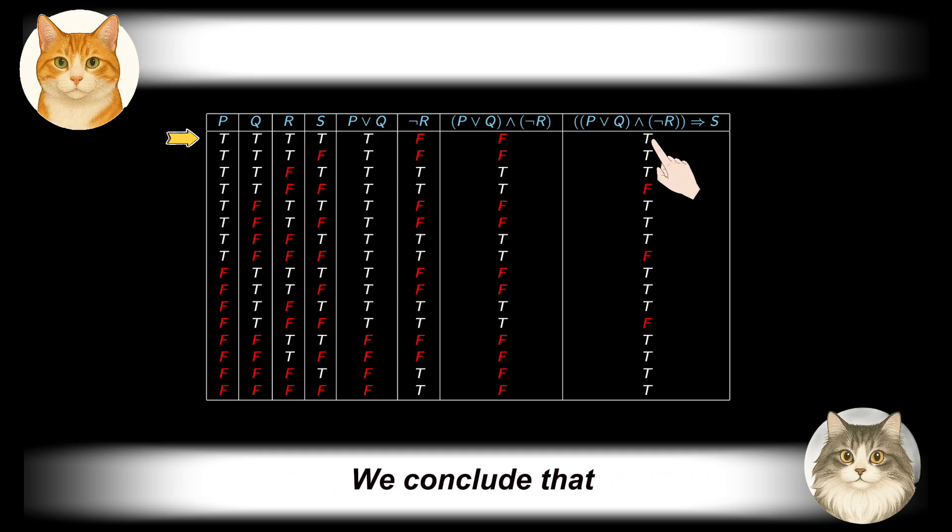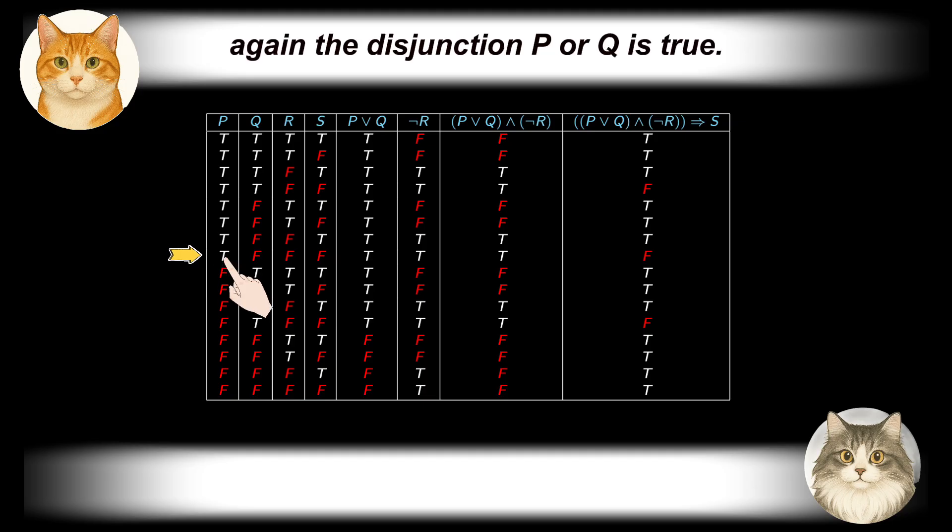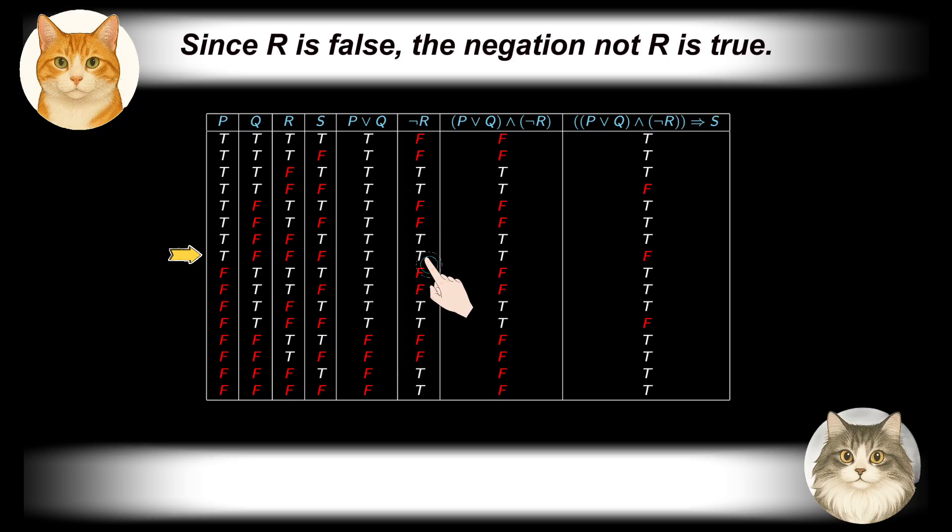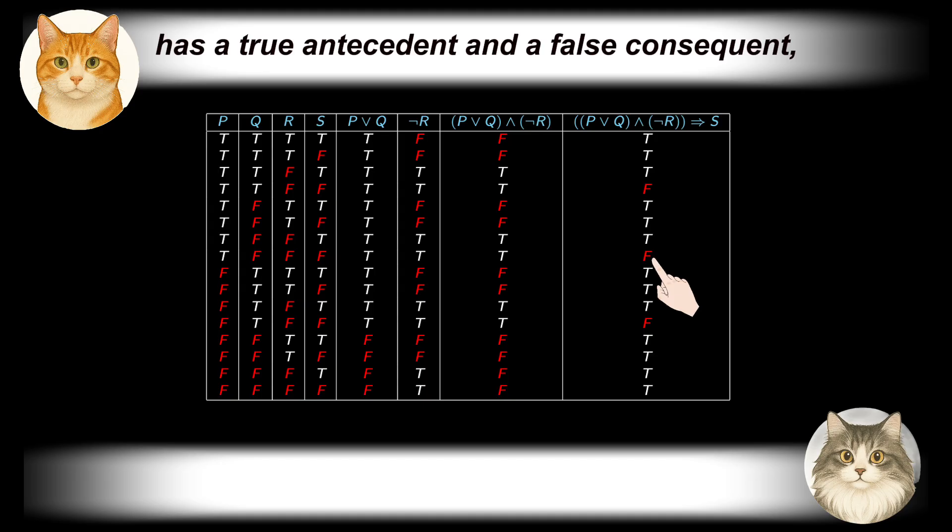Let us study another scenario where P is true while Q, R and S are all false. We proceed similarly as before. Since P is true, again the disjunction P or Q is true. Since R is false, the negation not R is true. Now that the two individual propositions P or Q and not R are both true, so is their conjunction. Now the implication has a true antecedent and a false consequent, which in turn produces falsity in this case. The remaining cases can be studied in a similar way, and we leave it to the audience.